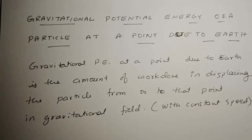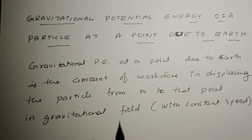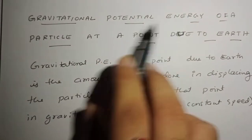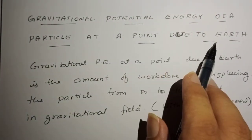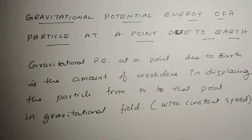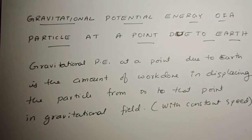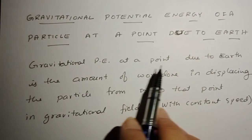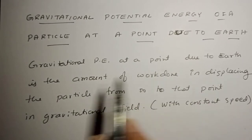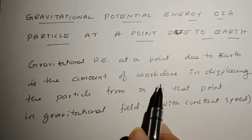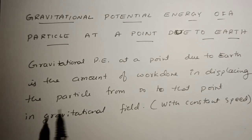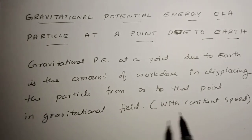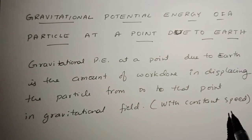In this video we will derive an expression for gravitational potential energy of a particle due to earth. Gravitational potential energy is basically work done. Gravitational potential energy at a point due to earth is the amount of work done in displacing the particle from infinity to that point in the gravitational field, provided you bring the particle with constant speed.